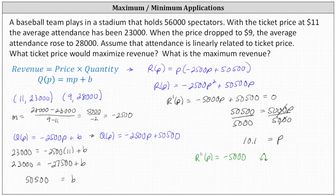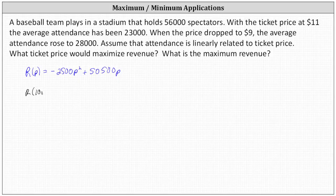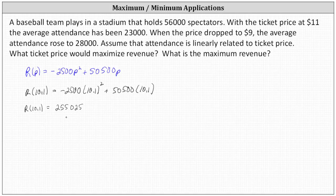The ticket price of $10.10 will maximize the revenue. To find the maximum revenue, we need to determine R of 10.1 by substituting P equals 10.1 into the revenue function. R of 10.1 is equal to negative 2,500 times the square of 10.1 plus 50,500 times 10.1, which equals $255,025. This is the maximum revenue when the price is $10.10.